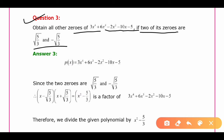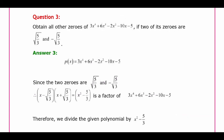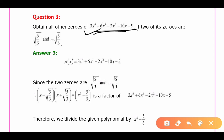In this equation, we have been given a polynomial with two solutions. Both solutions are identical but with opposite signs. Since the maximum power is 4, there will be four solutions in total. We have been given two solutions and we will find the two missing ones.